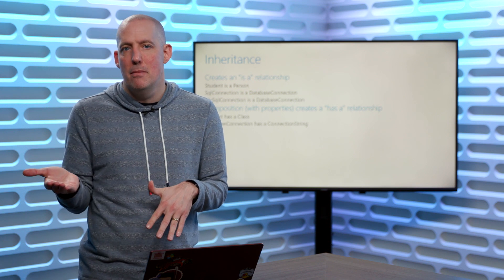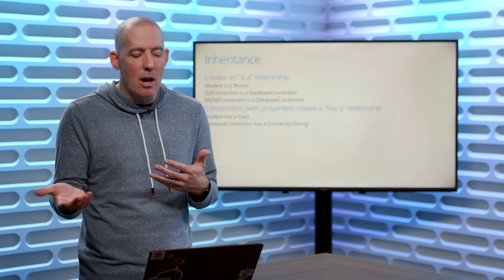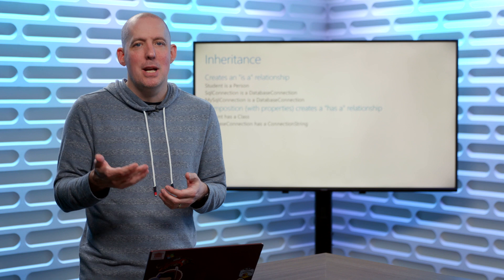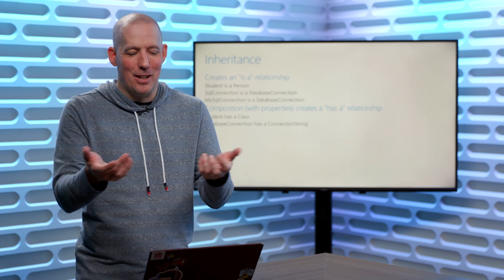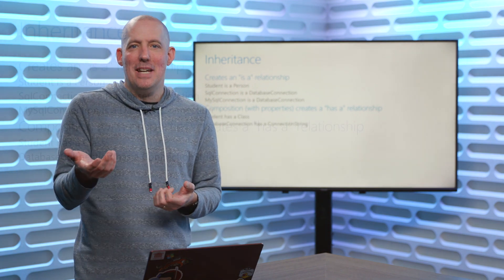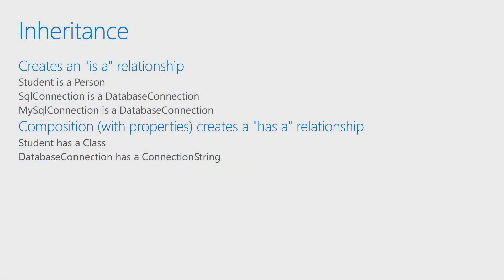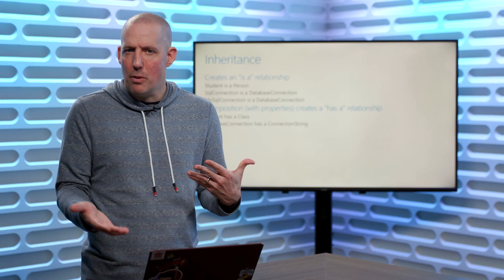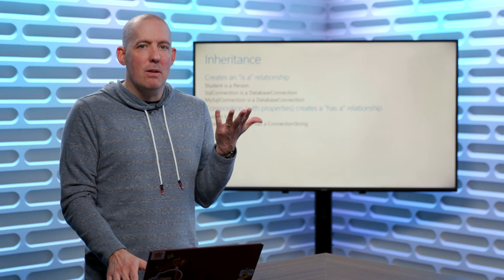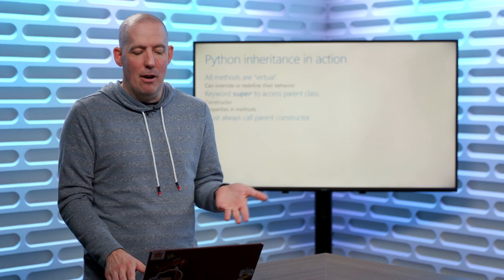I'm going to differentiate this from composition, which creates a has-a relationship. So a student has a class — for example, they attend classes — or a database connection has a connection string. That connection string might have the name of the server, username, password information, etc. So a has-a relationship is done with properties, while an is-a relationship is inheritance.